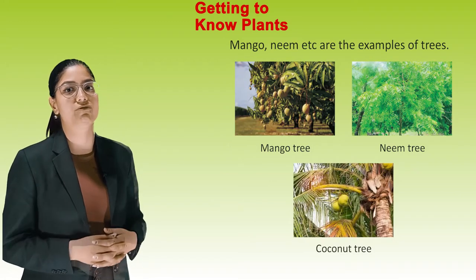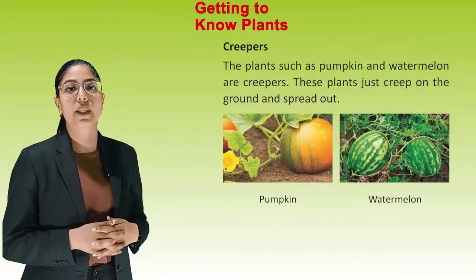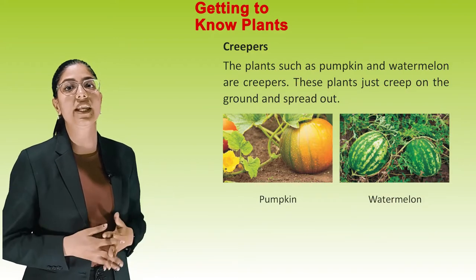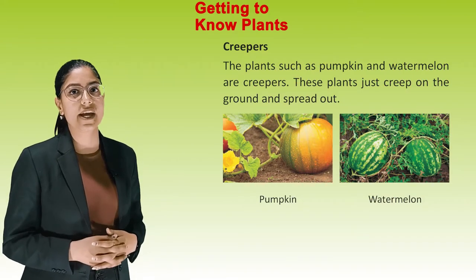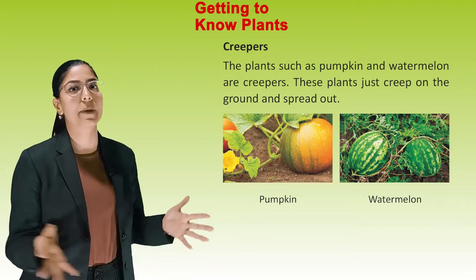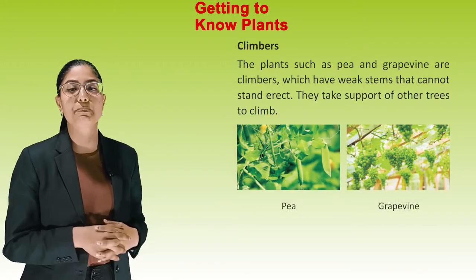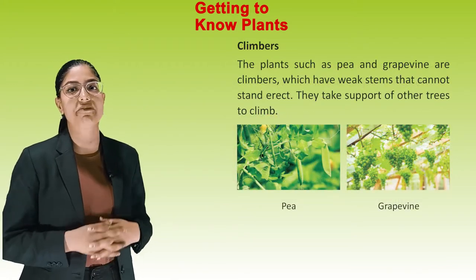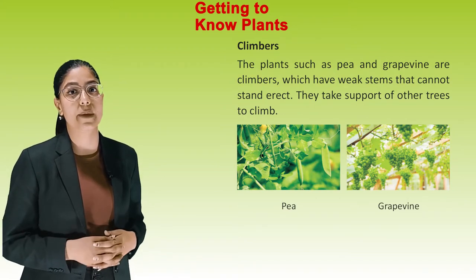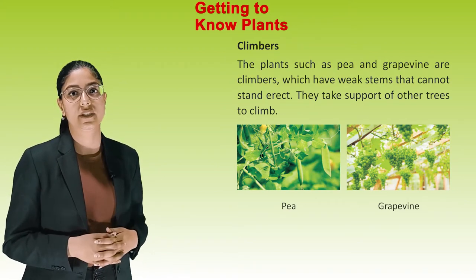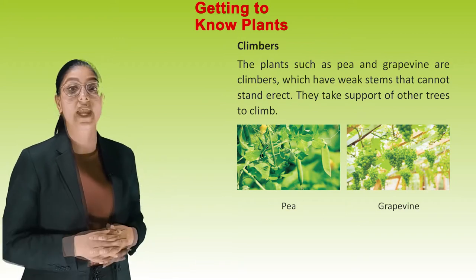Next is Creepers — plants such as Pumpkin and Watermelon are creepers; these plants just creep on the ground and spread out. Climbers — plants such as Pea and Grapevine are climbers, which have weak stems that cannot stand erect. They take support of other trees to climb.